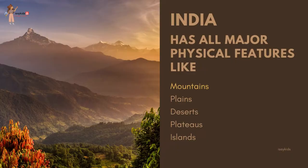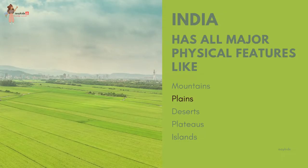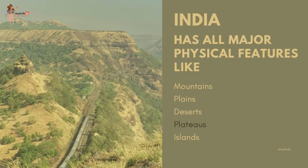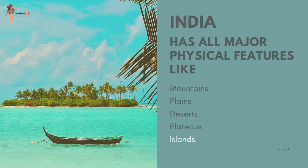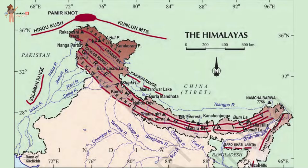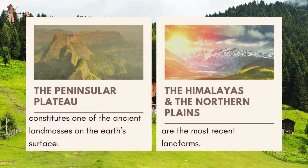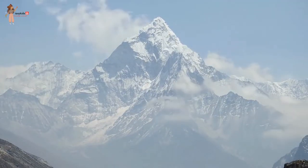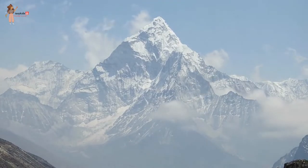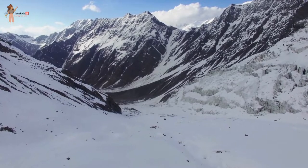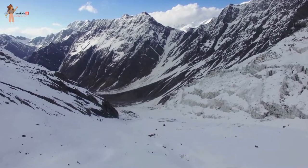The land of India displays great physical variation. Geologically, the peninsular plateau constitutes one of the ancient land masses on the earth's surface and was supposed to be one of the most stable land blocks. The Himalayas and the northern plains are the most recent landforms from the viewpoint of geology.